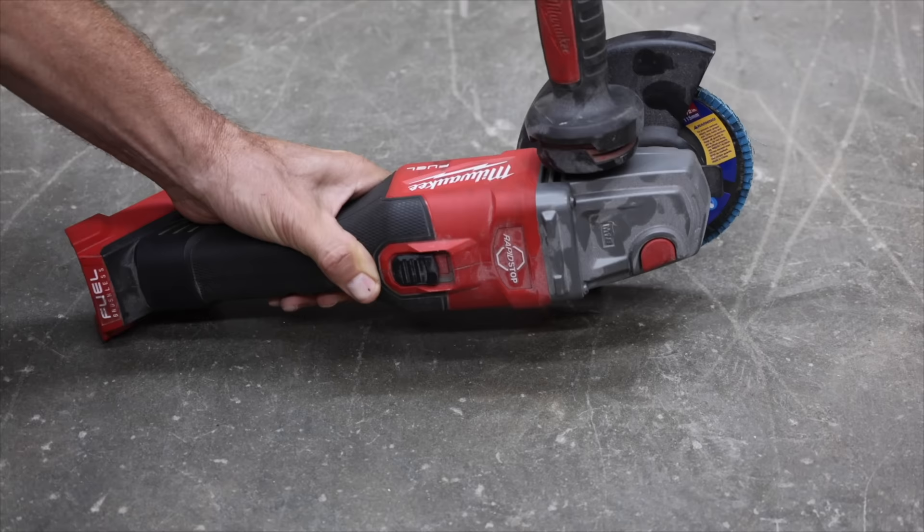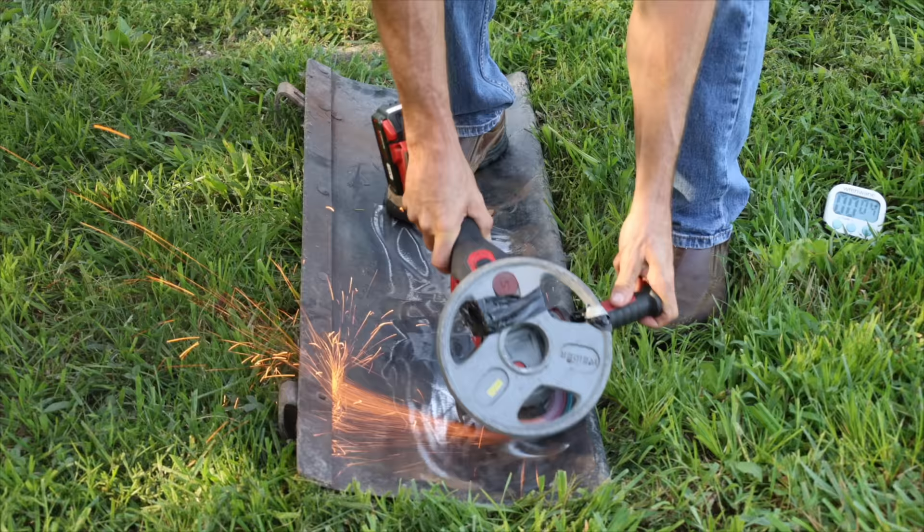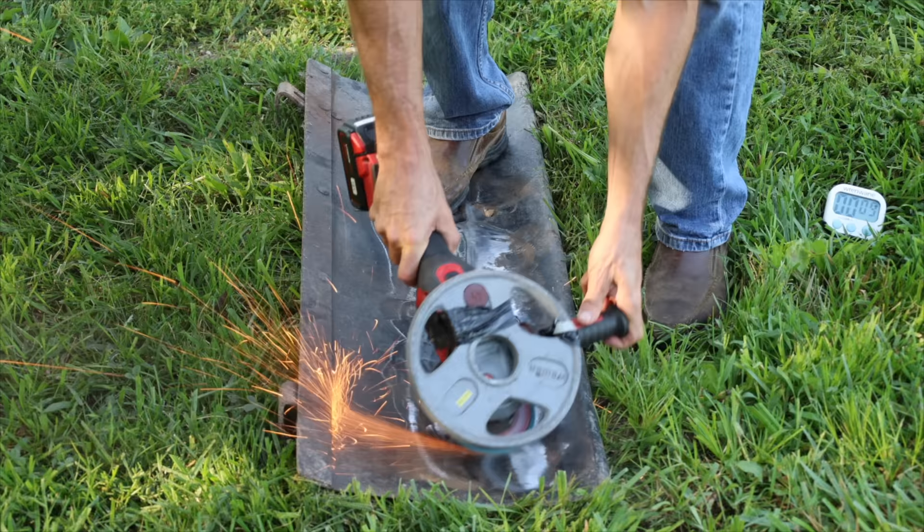An angle grinder is a very thirsty tool. The Emityke is really struggling. It's hard to believe but the Emityke has already given up in only 10 seconds. I'm unable to get the grinder to power up again.